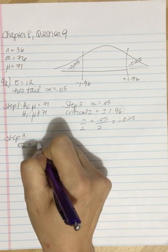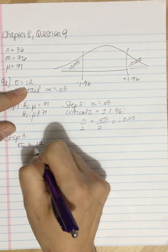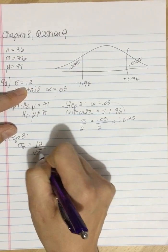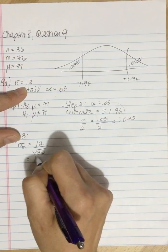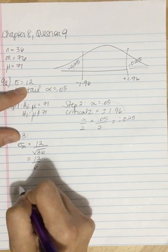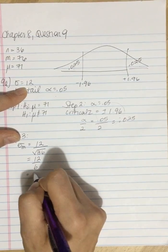So I'm going to take 12 divided by the square root of 36. So 12 divided by 6, which is equal to 2.